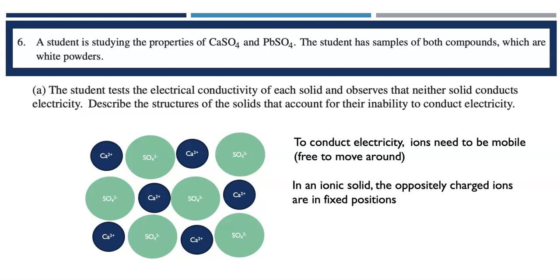If they try to move too far in XYZ directions, they're going to bump into their neighbors. So they're in these fixed positions and they're not free to move. And therefore, the ionic solids are not able to conduct an electrical current. They don't have mobile ions. And that is the gist of what you needed to say to get the point for Part A.